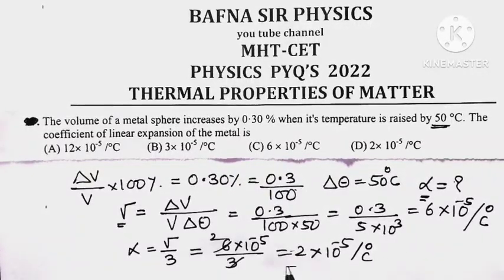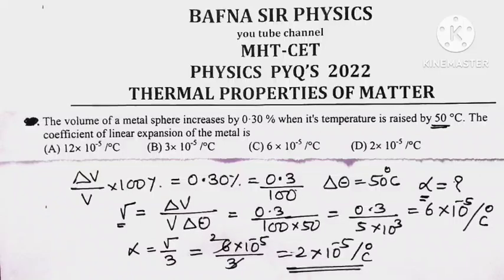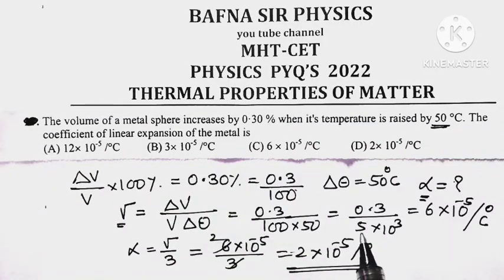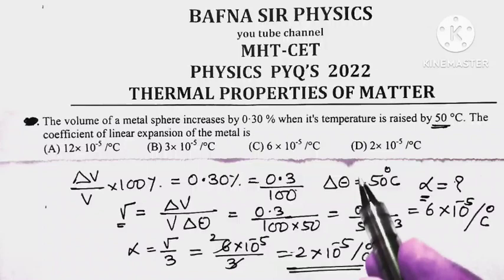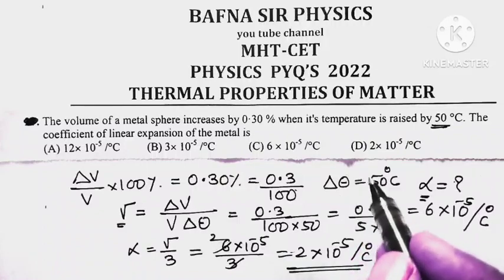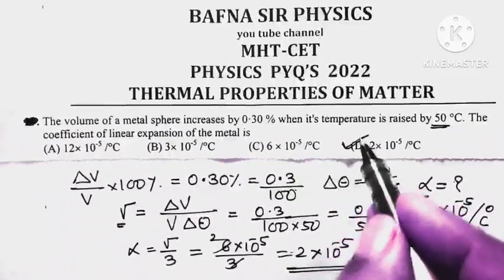So the correct answer for this question is 2 into 10 to the power minus 5 per degree Celsius. Option D is the correct option for this question.